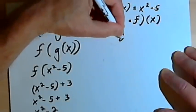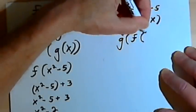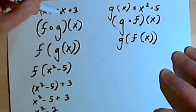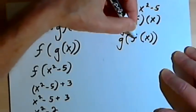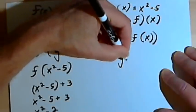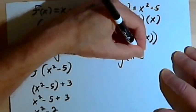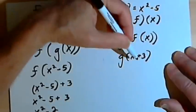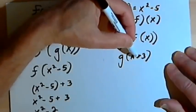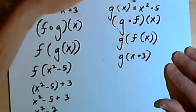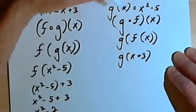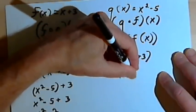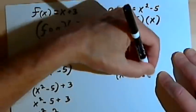So here we have g compose f of x. I'm going to turn that into g of f of x. So I want to start out by finding f of x, which I know f of x is x plus 3. So I'm going to replace f of x with x plus 3. That means I have g of x plus 3.